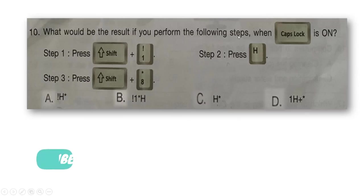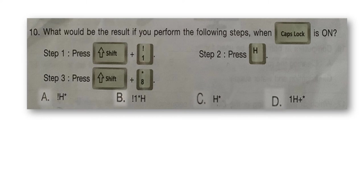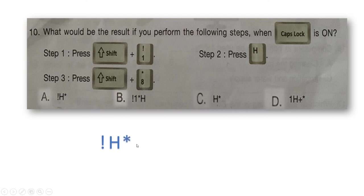Next question: what would be the result if you perform the following steps when Caps Lock is on? Step 1: press Shift and number 1. Step 2: press H. Step 3: press Shift and number 8. Caps Lock on means letters will be capitals. Step 1 — Shift and 1 gives an exclamation mark. Step 2 — pressing H with Caps Lock on gives capital H. Step 3 — Shift and 8 gives an asterisk. The answer matches option A.